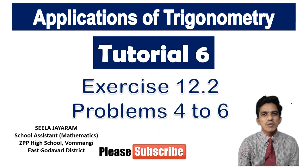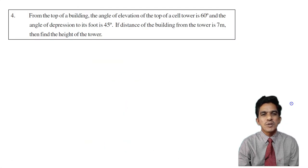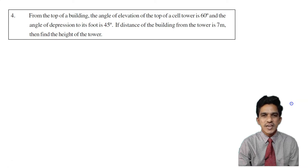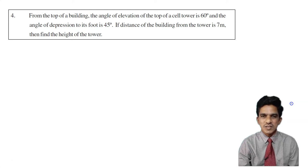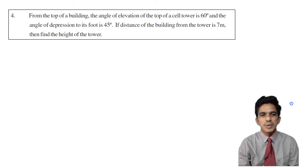This is question number 4. From the top of a building, the angle of elevation of the top of a cell tower is 60 degrees and the angle of depression of its foot is 45 degrees. This problem basically involves two objects: one is a building and the other is a cell tower.